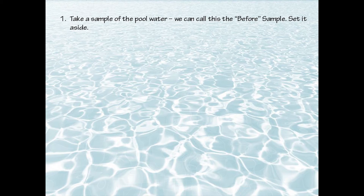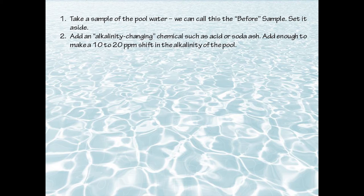Step one is that you take a sample of the pool and set it aside — this is your before sample. Then we add an alkalinity-changing chemical. This could be acid, liquid or dry acid, or soda ash or sodium bicarbonate. You want to add enough to make a noticeable shift in the alkalinity of the pool, maybe 10 to 20 parts per million of change.